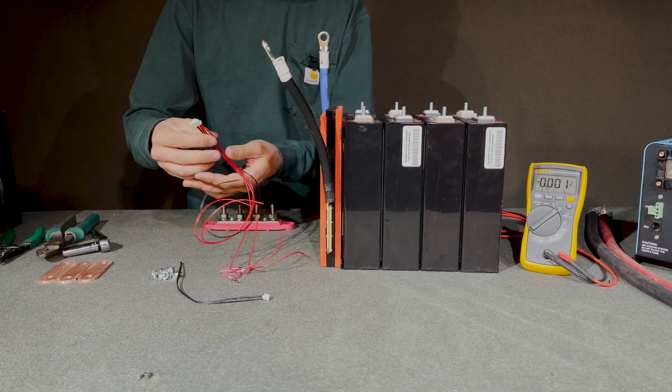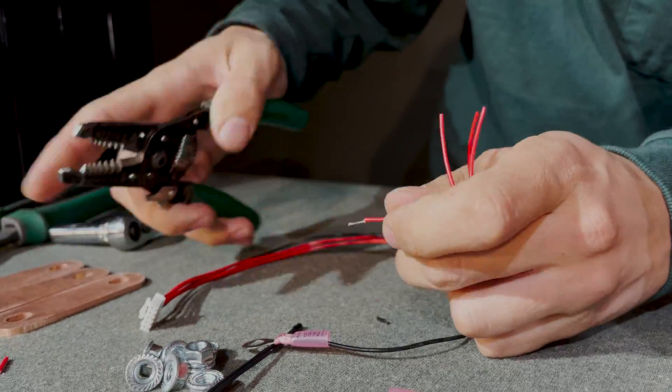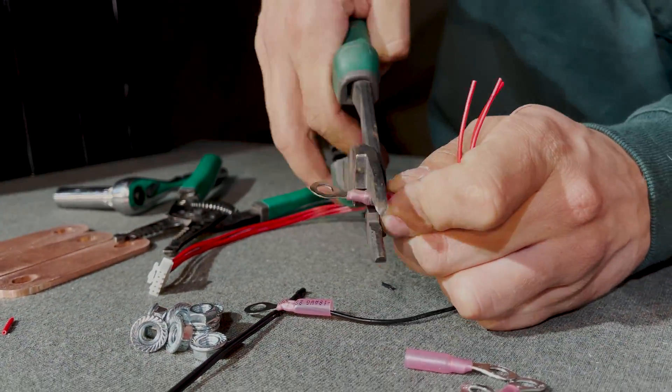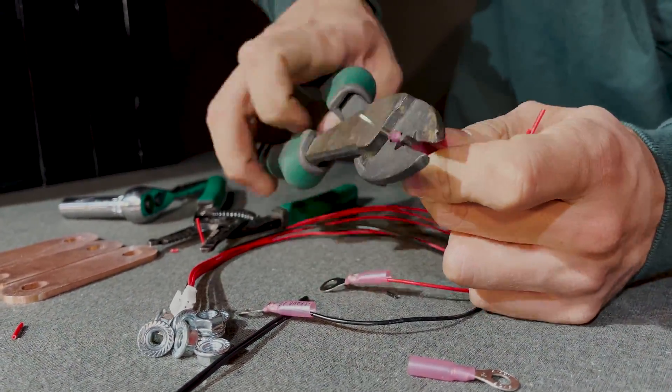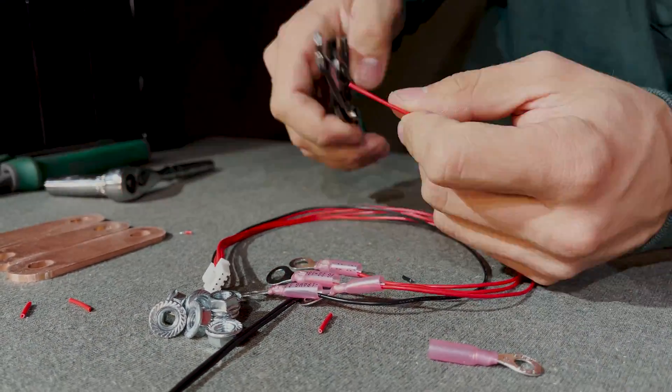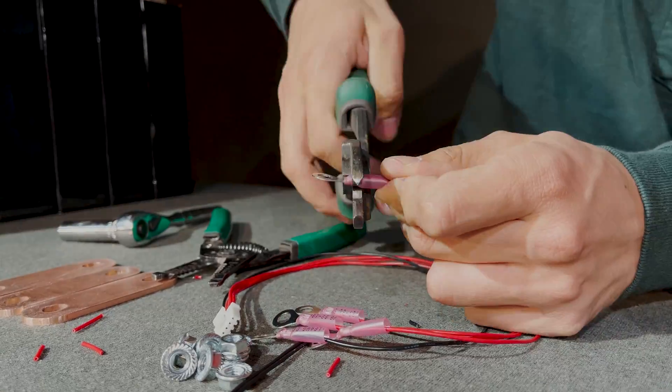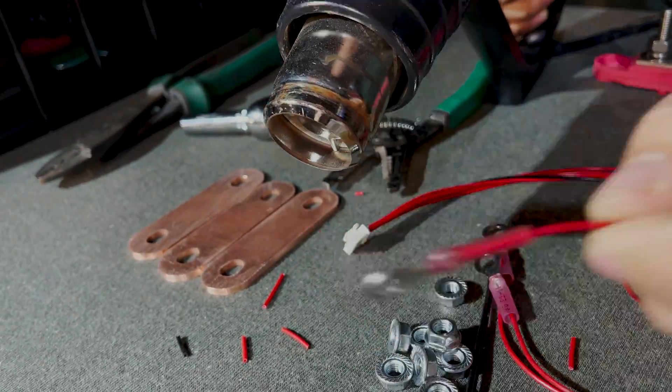Now that that's in place, we need to get some ring terminals put on our balance lead. And that's as simple as just stripping them back and crimping on some terminals. Now for this, we find it's easiest just to twist the wire and then fold it in half before sticking on the ring terminal. That way, these tiny wires get a better bite in the ring terminals. And we recommend the ring terminals that utilize heat shrink.